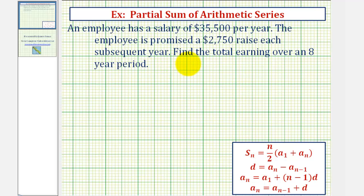The first thing to recognize about this question is we're trying to find the total earnings over an eight year period, not just the salary in the eighth year. Therefore, we're finding a partial sum of a series, not a term in a sequence. And because the salary is increasing by $2,750 each year, we're finding a partial sum of an arithmetic series.